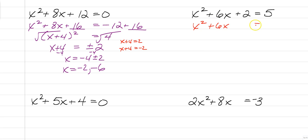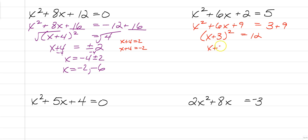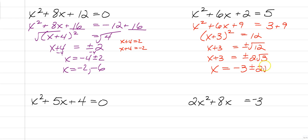So x squared plus 6x equals 3. You have to get the constants on the right-hand side first. Now, half of 6 is 3, squared is 9, so we're going to add 9 to both sides. We can write this as a square of a binomial: x plus 3 squared equals 12. Square root both sides, and you have x plus 3 equals plus or minus square root of 12, which you must simplify. That's actually x plus 3 equals plus or minus 2 root 3, after you simplify the square root of 12. Subtract 3 from both sides, and your answer is x equals negative 3 plus or minus 2 root 3.